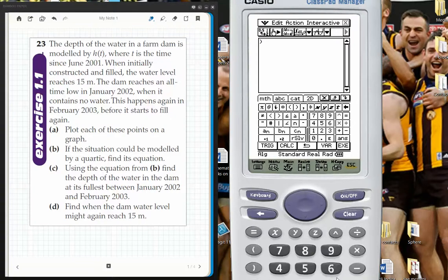This is for Year 12 methods, it comes out of chapter 1.1, question 23. The depth of water in a farm dam is modeled by this rule called H of T, where T is the time since June 2001.